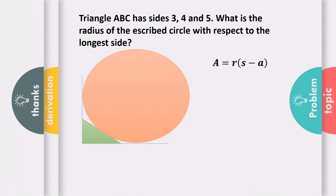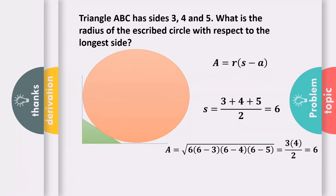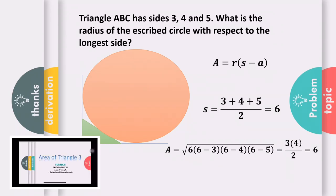The area of the triangle, given the radius of the escribed circle and the three sides, is equal to r times (s - a), where s is the semi-perimeter. So let's find the semi-perimeter first. It is (3 + 4 + 5) / 2, equal to 6. Since the three sides are given, we can use Heron's formula.